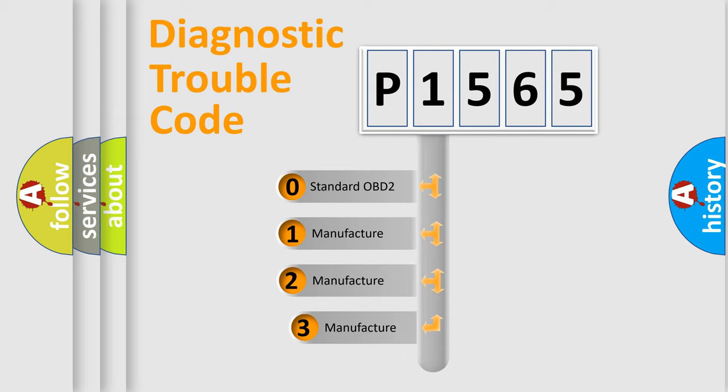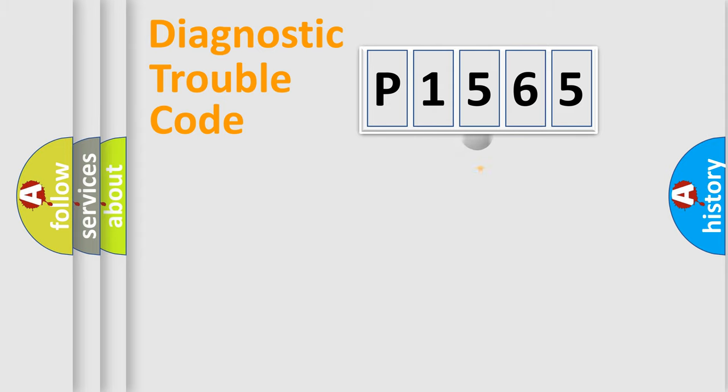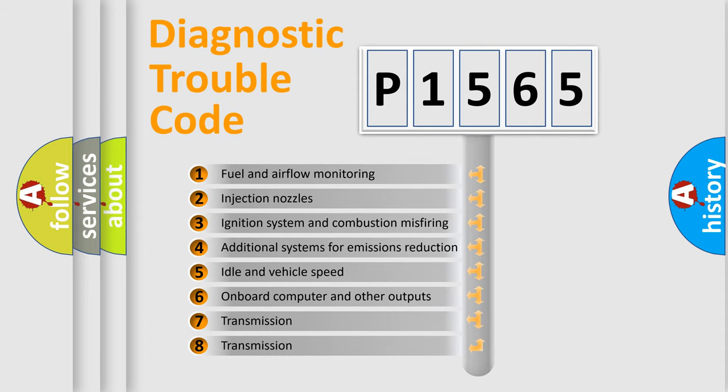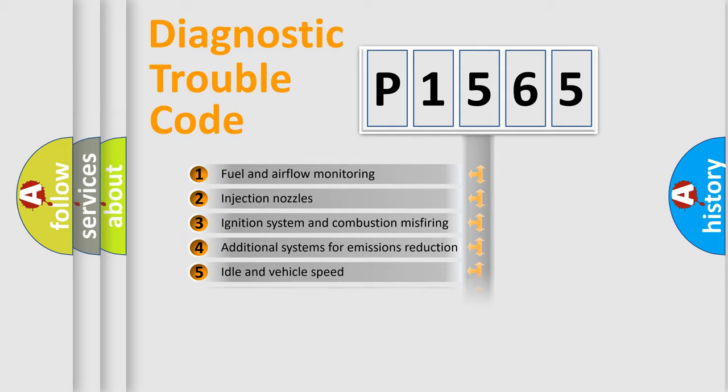If the second character is expressed as zero, it is a standardized error. In the case of numbers 1, 2, or 3, it is a manufacturer-specific expression of the car-specific error. The third character specifies a subset of errors. The distribution shown is valid only for the standardized DTC code.